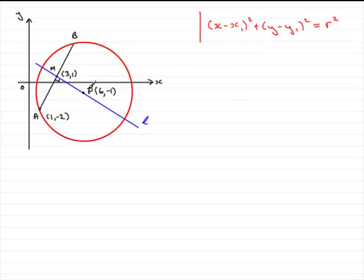We've already found that the center has coordinates (6, -1), so x1 is 6 and y1 is minus 1, and r is the radius.